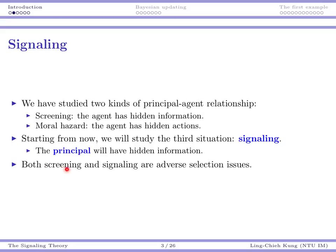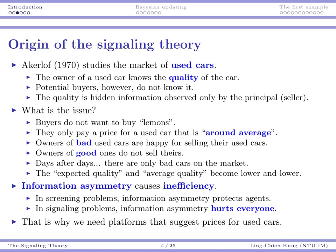Altogether, screening and signaling are both called adverse selection problems. So in the future when someone talks to you about adverse selection, make sure to first identify whether it is the principal or the agent that has private information. Now let's talk about the origin of signaling.